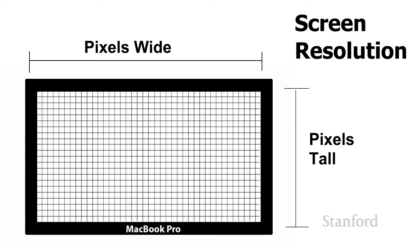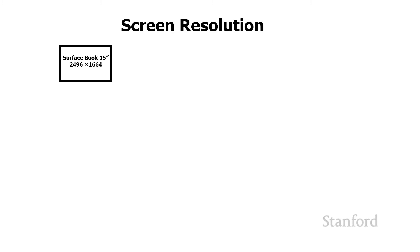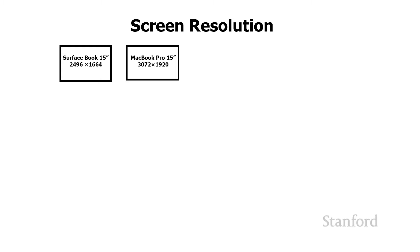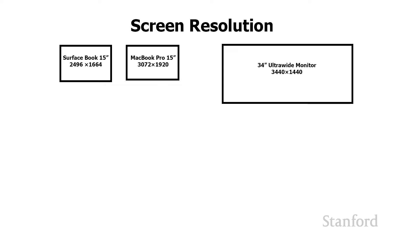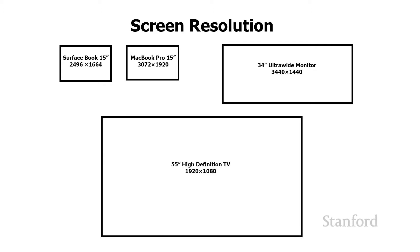One thing you might want to look at when considering purchasing a computer or a television is the screen resolution. The screen resolution is how many pixels wide and how many pixels tall a particular display is. Here are some sample screen resolutions: a Surface Book 15 inches is 2,496 pixels across and 1,664 pixels down; a MacBook Pro 15 inches is 3,072 pixels from left to right and 1,920 pixels from top to bottom; a 34-inch ultrawide monitor is 3,440 pixels wide by 1,440 pixels tall; and a 55-inch high definition television is 1,920 pixels wide and 1,080 pixels tall.